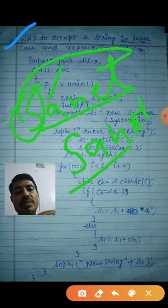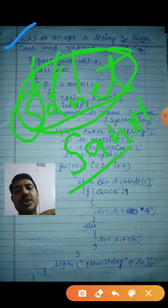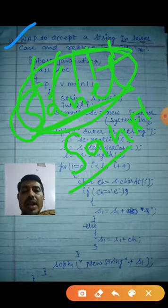Find out the length of this one and start from 0. So 0 means charAt 0, charAt 1, charAt 2, charAt 3, charAt 4. Its length is what? 5. So less than 5 you will go. Clear? Now start it here.